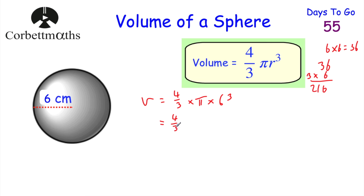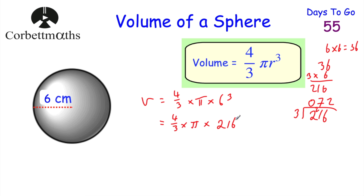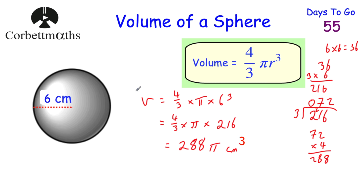So we have V = 4/3 × π × 216. We need 4/3 of 216: divide 216 by 3 to get 72, then multiply by 4 to get 288. So the volume is 288π centimetres cubed. Well done if you got that.